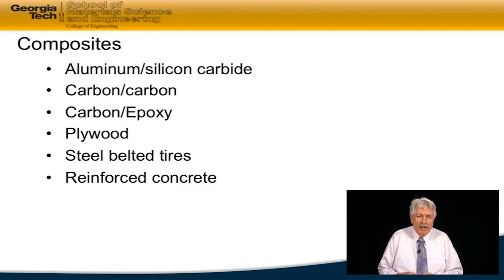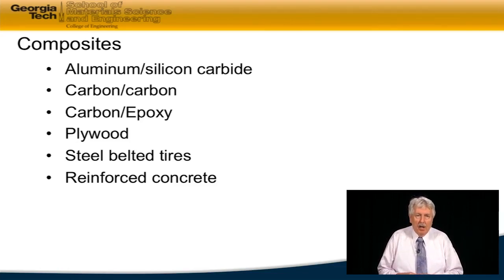There are a variety of different types of polymeric composites, which include carbon-carbon, carbon-epoxy, and plywood. Steel-belted radials represent another composite material. Rather than operating at a microscopic level, they function at a much more macroscopic level.